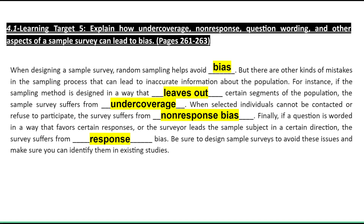Today's lesson is going to focus on bias, or more specifically, how to hopefully avoid bias. When designing a sample survey, random sampling helps avoid bias — that's giving everyone an equal chance to be part of the sample selected. But there are other kinds of mistakes in the sampling process that, even if we do a random sample, can still lead to inaccurate information about the population.